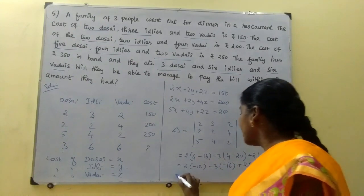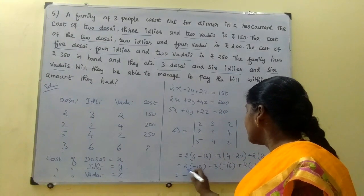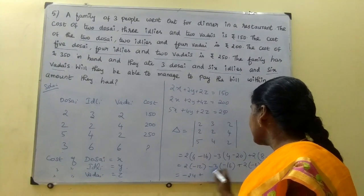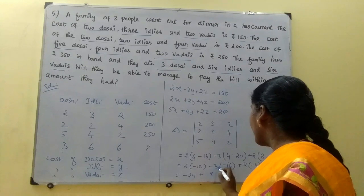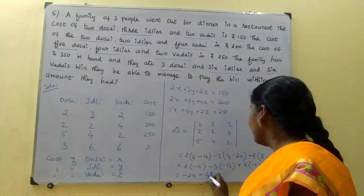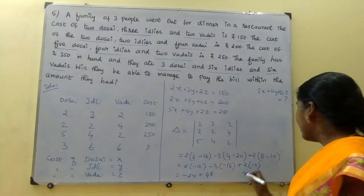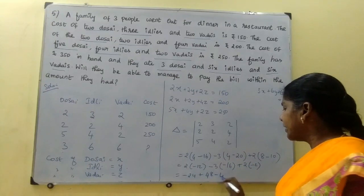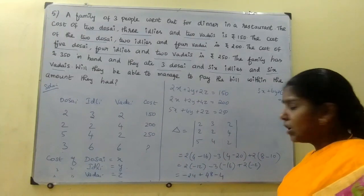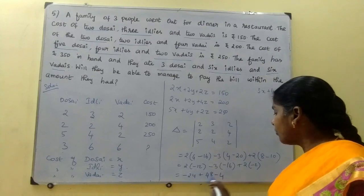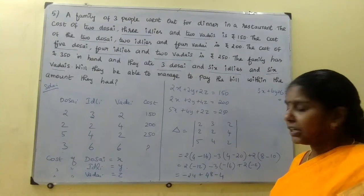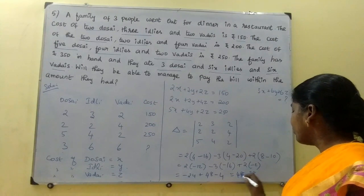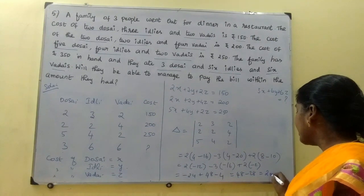So that gives: 2 × (−12) = −24. Minus 3 × (−16) = plus 48. Plus 2 × (−2) = −4. That is equal to −24 + 48 − 4 = 20, which is not equal to 0. So delta equals 20.